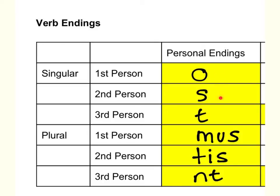The six personal endings are: O, S, T, mus, tis, and NT. These are the singulars.